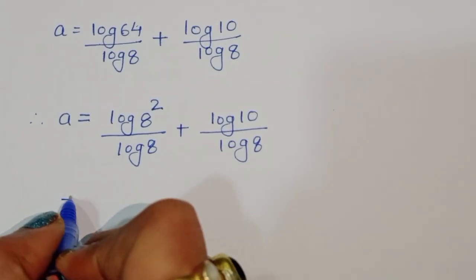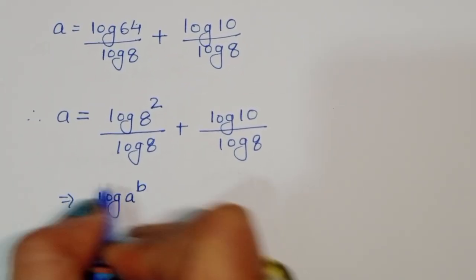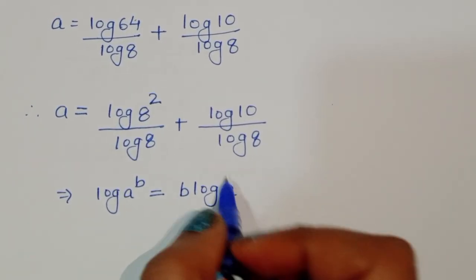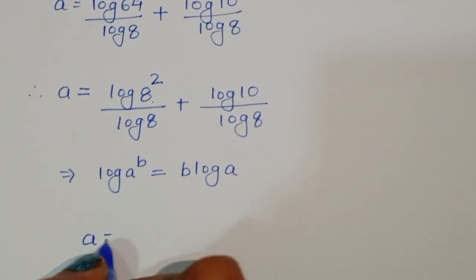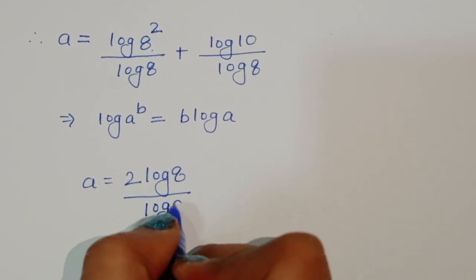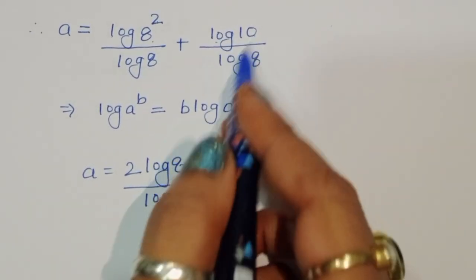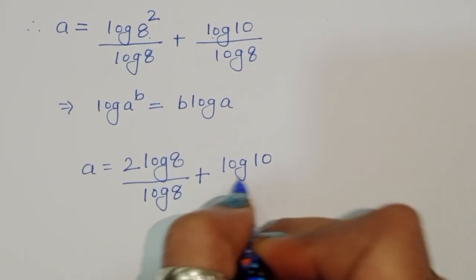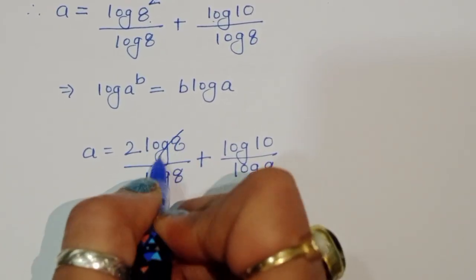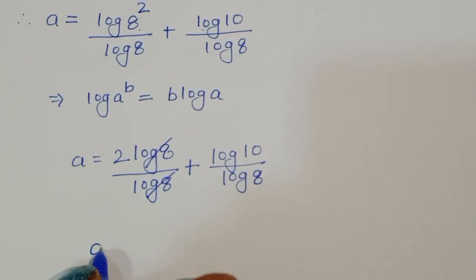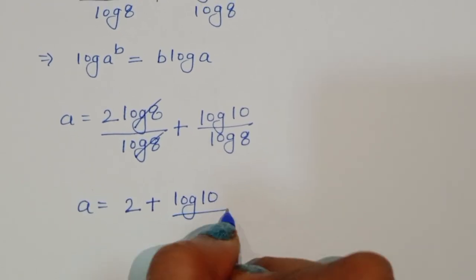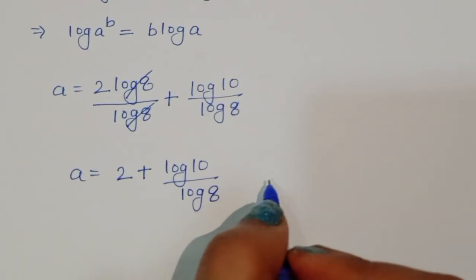Using the formula log of a power b equals b times log a, log of 8 squared becomes 2 times log of 8. So a equals 2 log of 8 divided by log of 8, plus log of 10 divided by log of 8. The 2 log 8 over log 8 cancels to give 2, so a equals 2 plus log of 10 divided by log of 8.